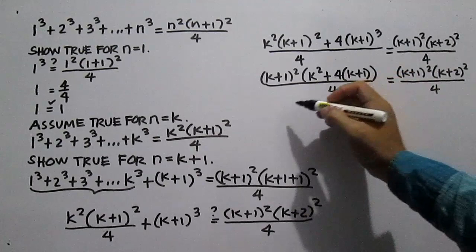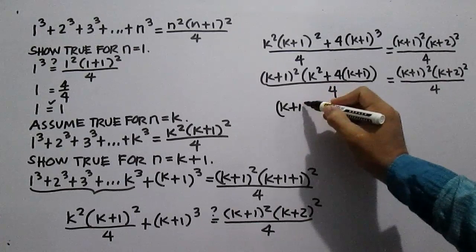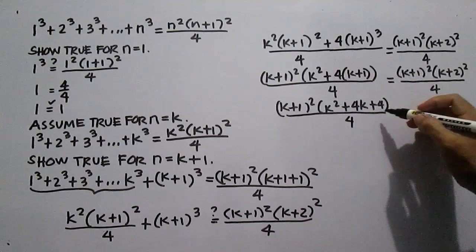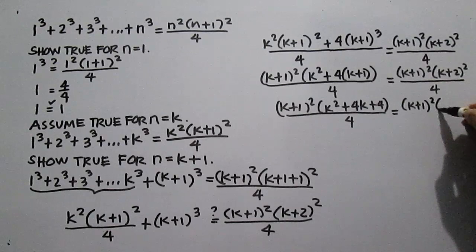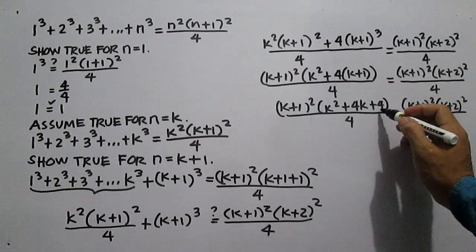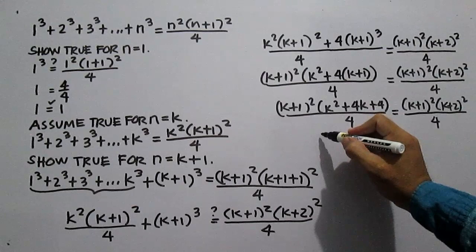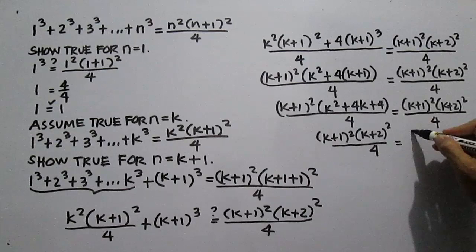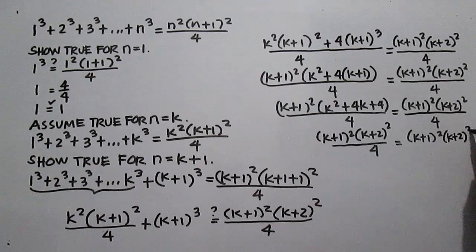Multiply 4 by the quantity k plus 1 to get: the square of the quantity k plus 1 times k squared plus 4k plus 4, all over 4, equals the square of the quantity k plus 1 times the square of the quantity k plus 2, all over 4. This expression is a perfect square trinomial, and its factor is the square of a binomial — the square of the quantity k plus 2. So the square of the quantity k plus 1 times the square of the quantity k plus 2, all over 4, equals the square of the quantity k plus 1 times the square of the quantity k plus 2, all over 4. True.